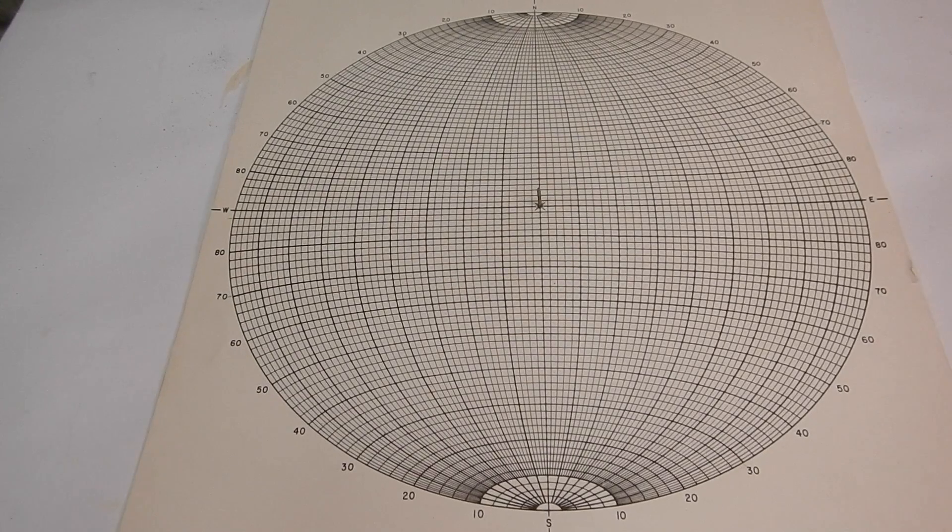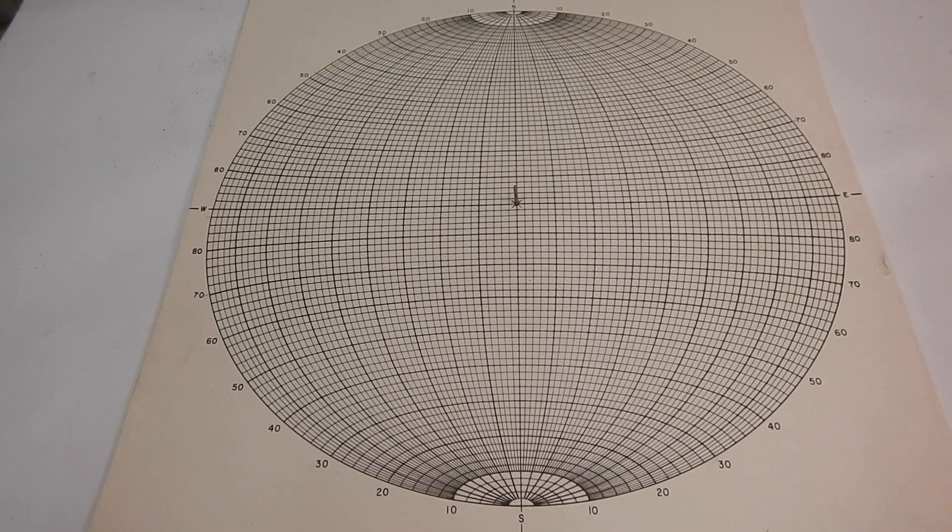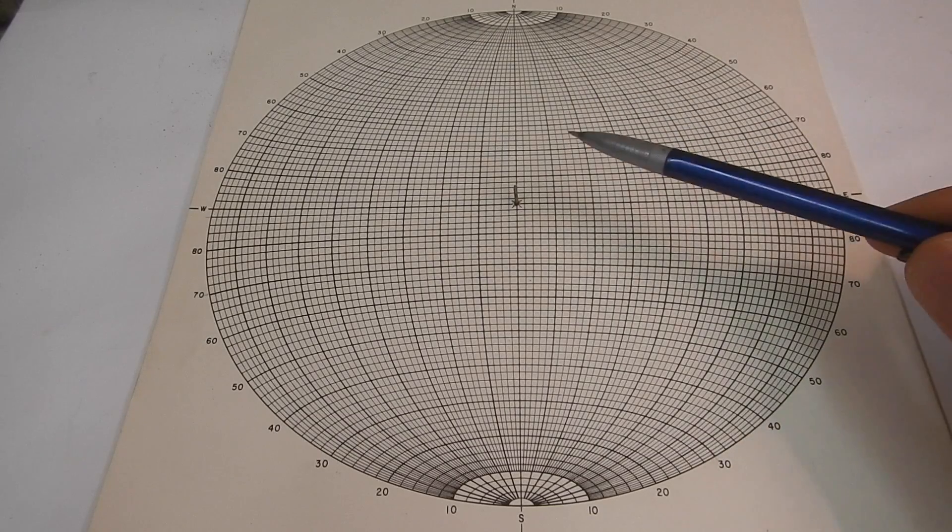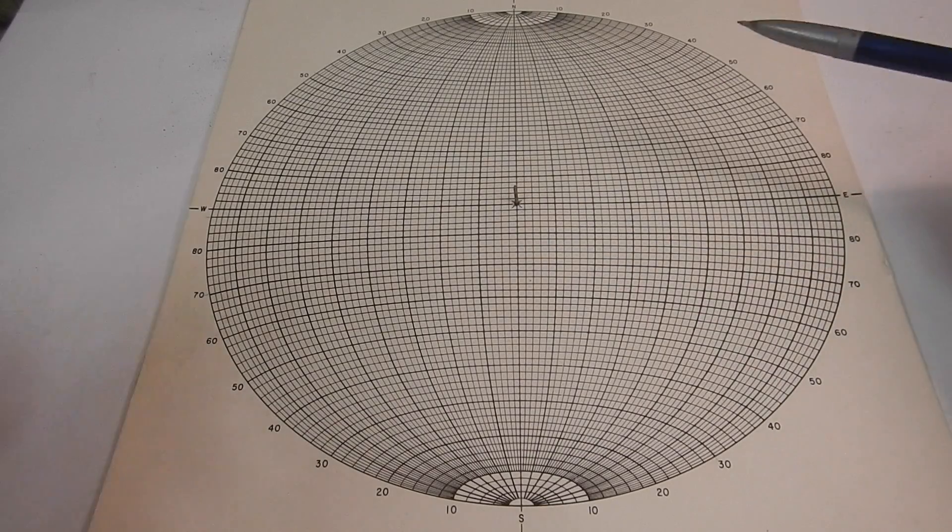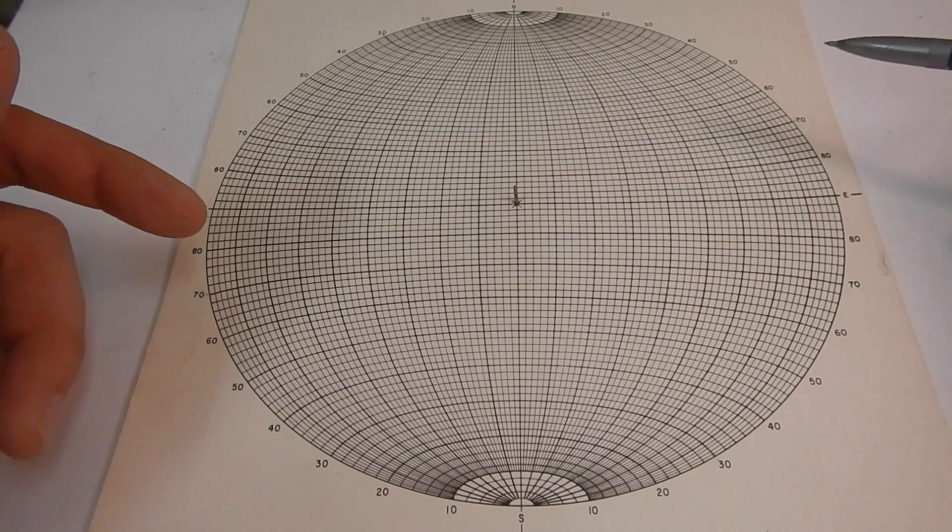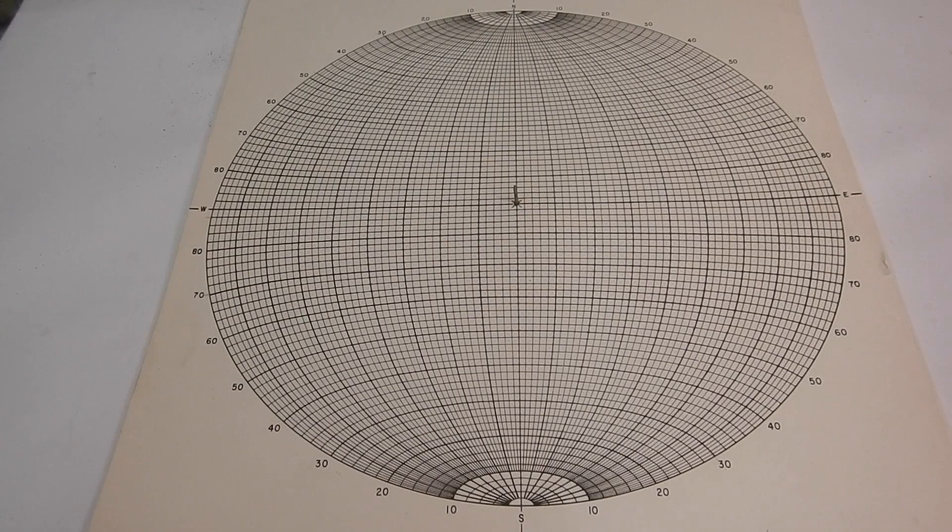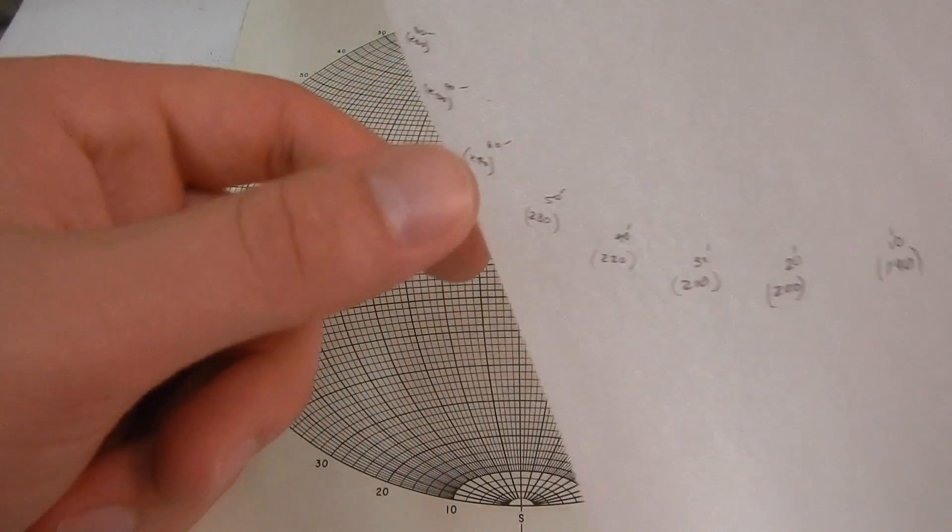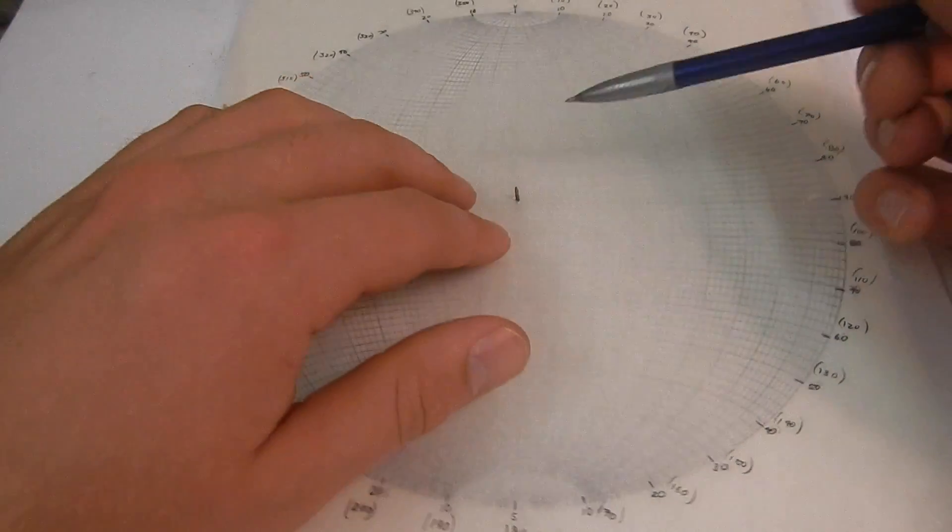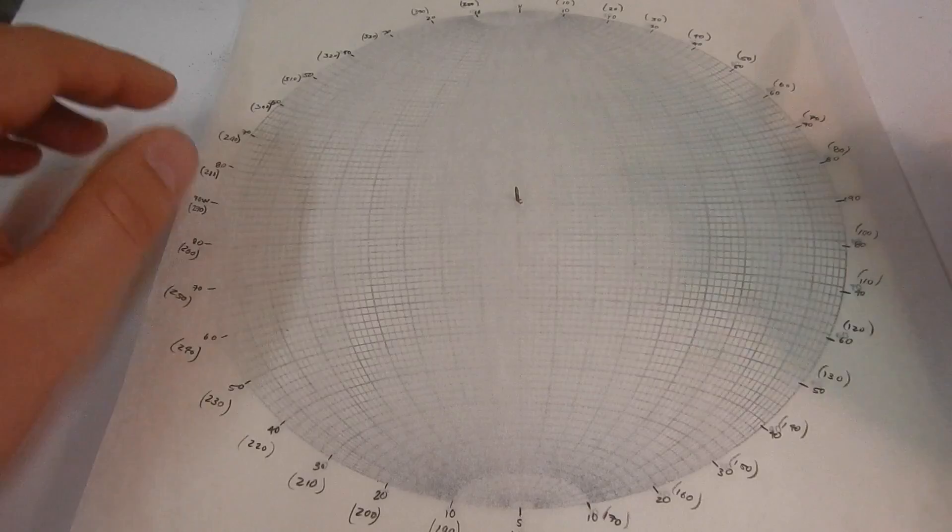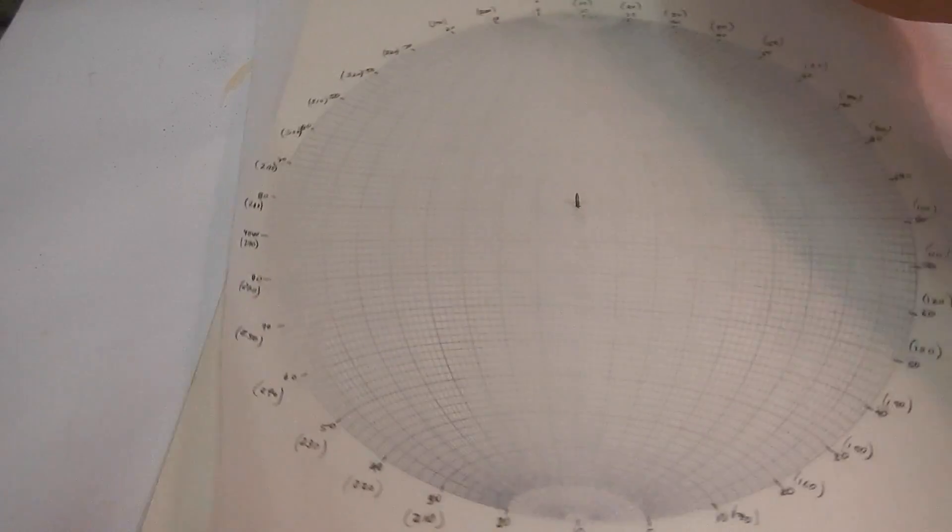So how this usually works is you'll have a hard copy of a stereonet and then you'll have a needle or a tack sticking up out of it and we're not actually going to draw on this stereonet but we're going to put tracing paper on top so you can keep using it instead of just using it that one time. So what you do, get your tracing paper, poke a hole and as you can see your tracing paper will rotate around the stereonet now.